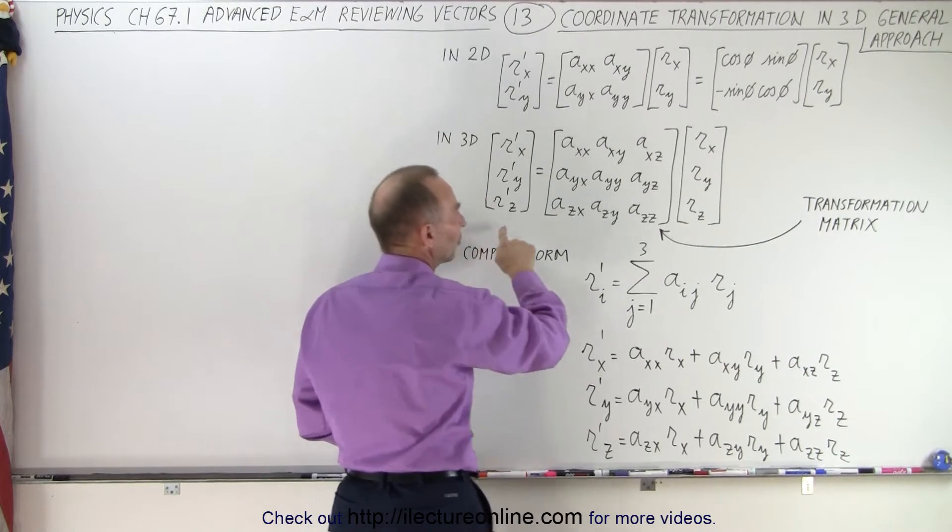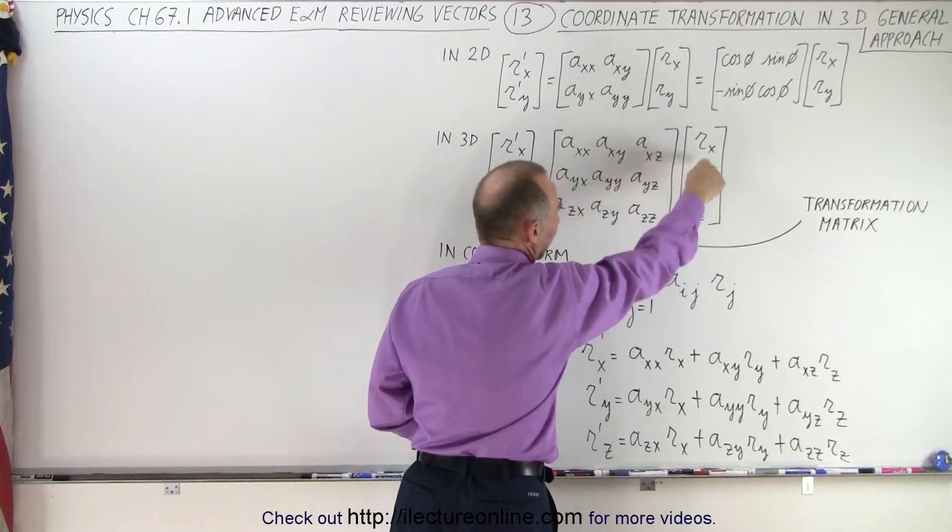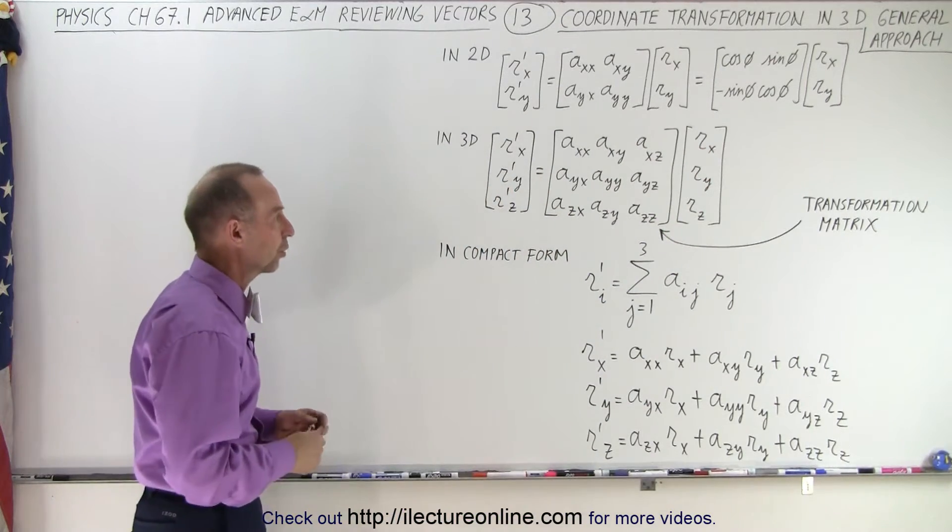And this is the x, y, and z coordinates of the vector in the original coordinate system.